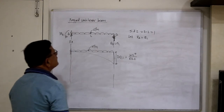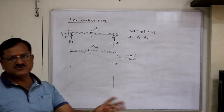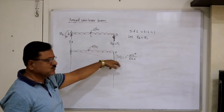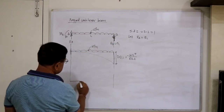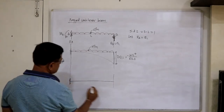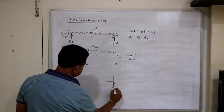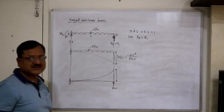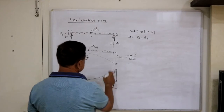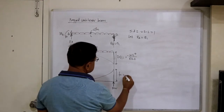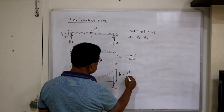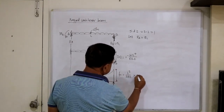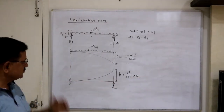Remove the external load and apply a unit upward load in the direction of R_B. Since there is only one unknown, we only need the deflection — no rotation is required. The flexibility coefficient F11 = L³ / 3EI (free-end deflection of a cantilever under unit point load). This coefficient is multiplied by Q1 to give the displacement due to Q1.